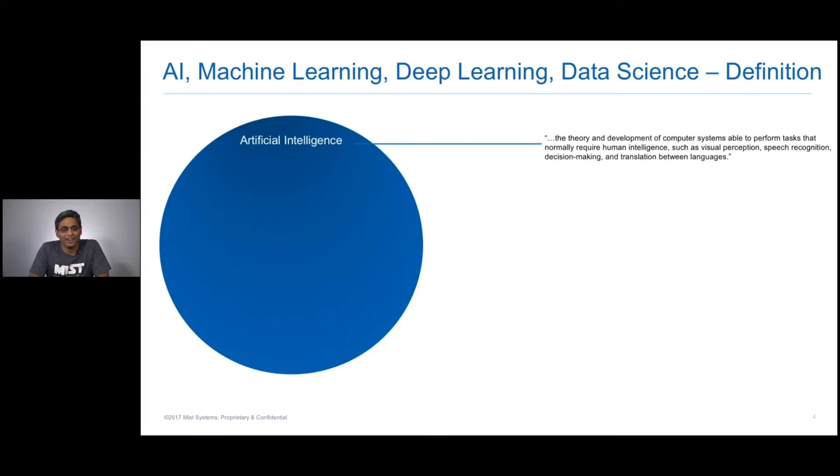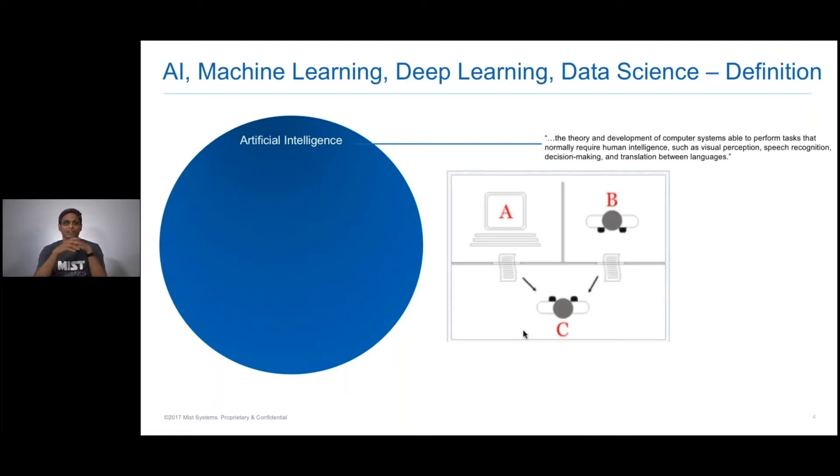Artificial intelligence is the big umbrella of what we are living in today. Our worlds are being transformed with AI. The best test of AI is the Turing test that was proposed by Professor Alan Turing five, six decades ago. What is the Turing test? The Turing test is quite simple.